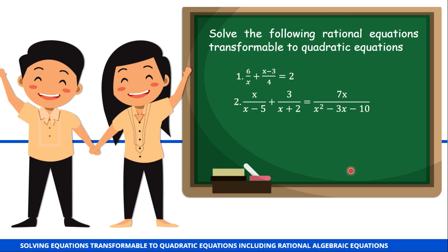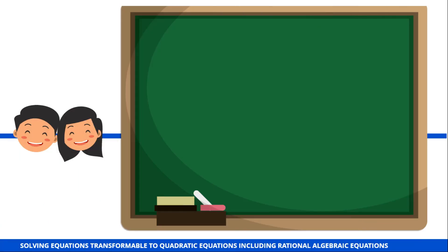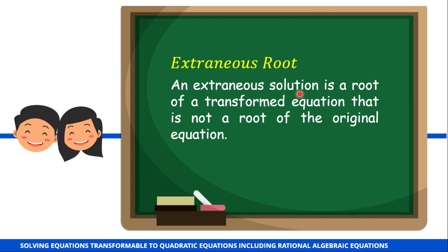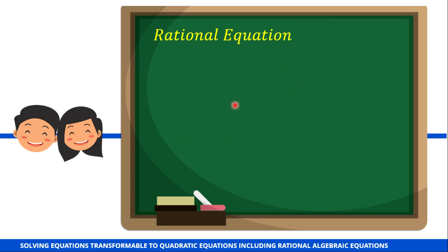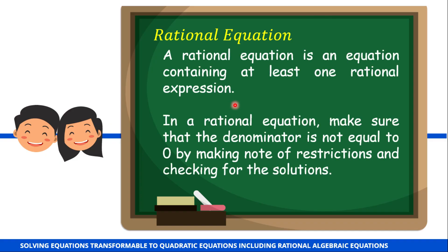Now let's have a short review about extraneous root and rational equations. An extraneous root or solution is a solution of the transformed equation, but it is not a solution of the original equation. A rational equation contains at least one rational expression. In a rational equation, the denominator cannot be zero. That is why we have restrictions — values of the variable that would make the denominator zero. In a rational equation transformable into a quadratic equation, we may encounter what we call an extraneous root or solution.